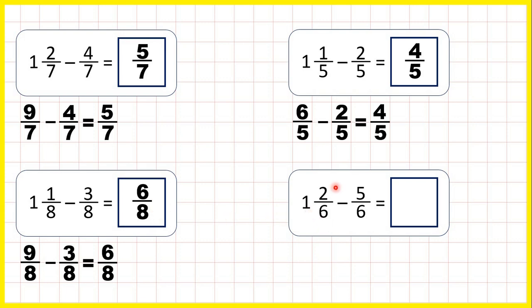And now one and two-sixths minus five-sixths. The fraction we're subtracting is larger than the fraction in our mixed number, but we can change this to an improper fraction.